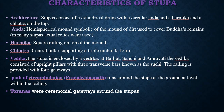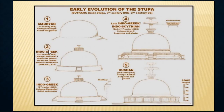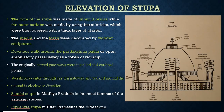The path of circumambulation — also called Pradakshina Path, or Parikrama in Hindu temples — runs around the Stupa at ground level within the railing. Toranas are ceremonial gateways around the Stupas. In the early stage, the Mauryans built a simple mound; later, architectural work evolved the structure into different forms. The core of the Stupa was made of unburnt bricks, while the outer surface used burnt bricks covered with a thick layer of plaster. The Medhi and Toranas were decorated with wooden sculptures. Devotees walk around the Pradakshina Path as a token of worship. The originally carved gateways were installed at four cardinal points.